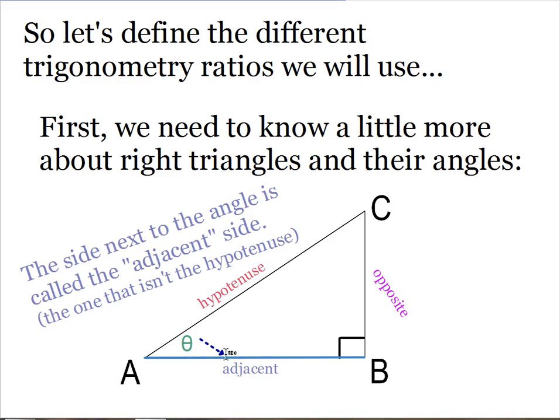Now notice I have two sides that are next to theta, but one of those will always be the hypotenuse. So when I say the adjacent side, it's always the side that's next to the angle that's not the hypotenuse.